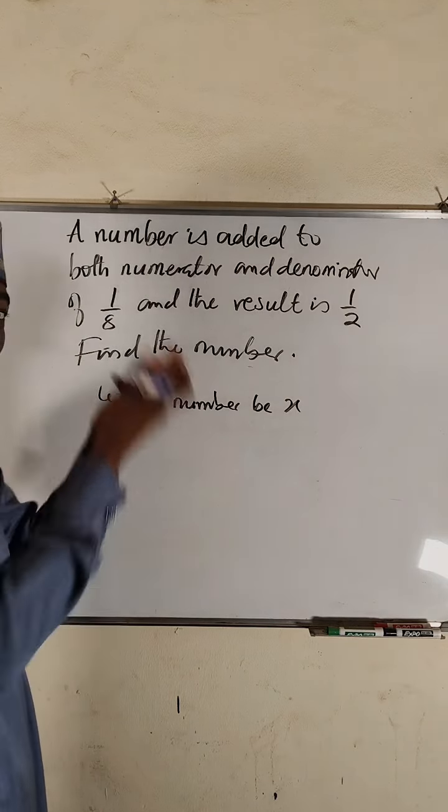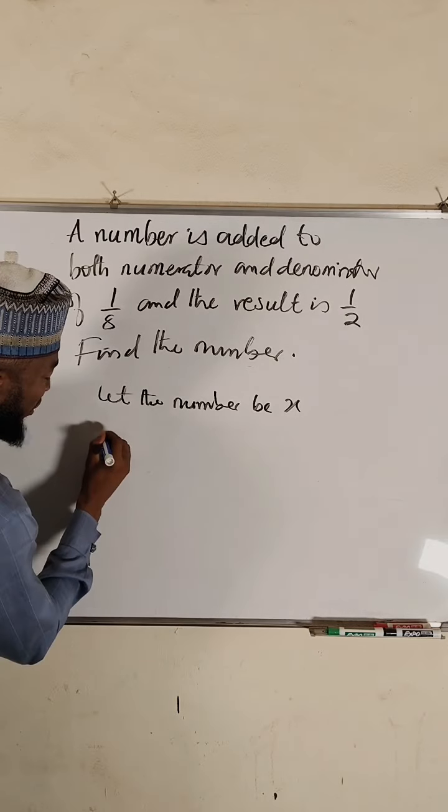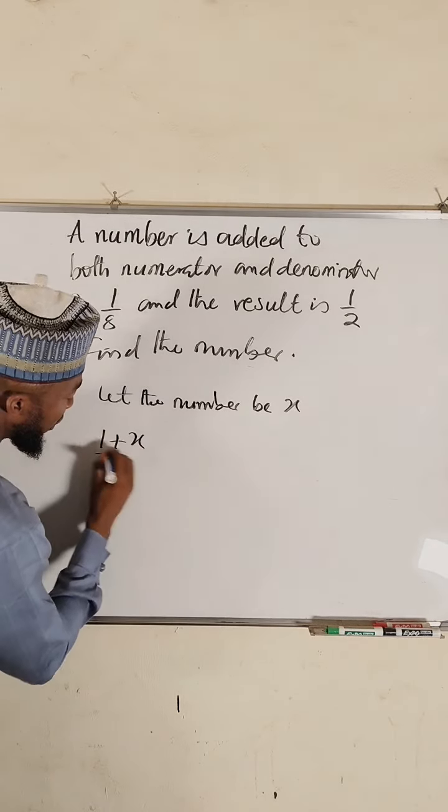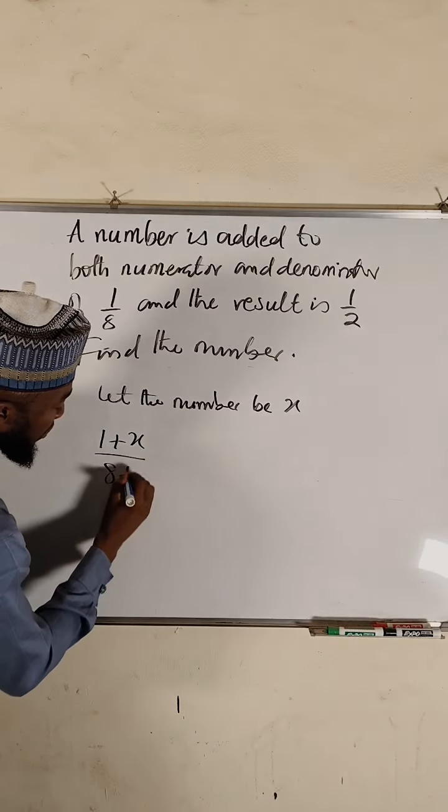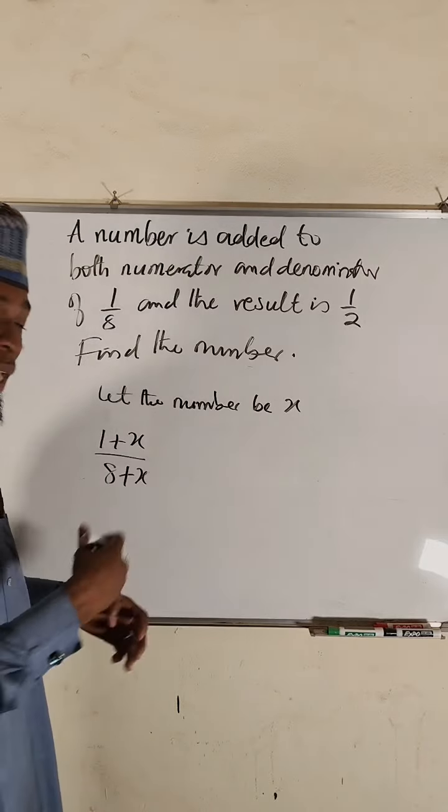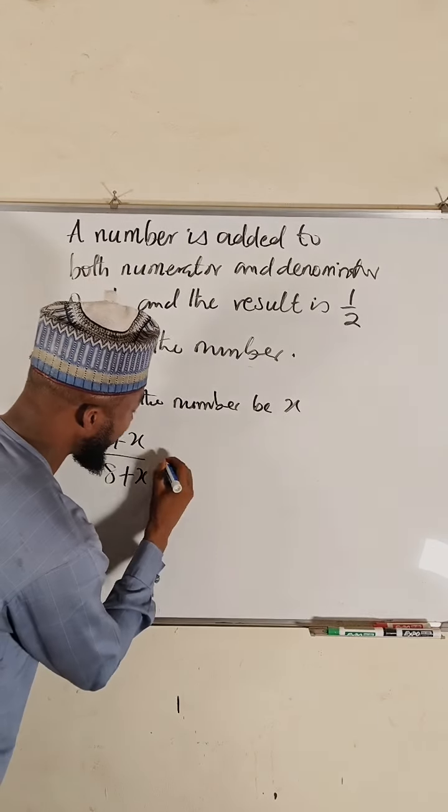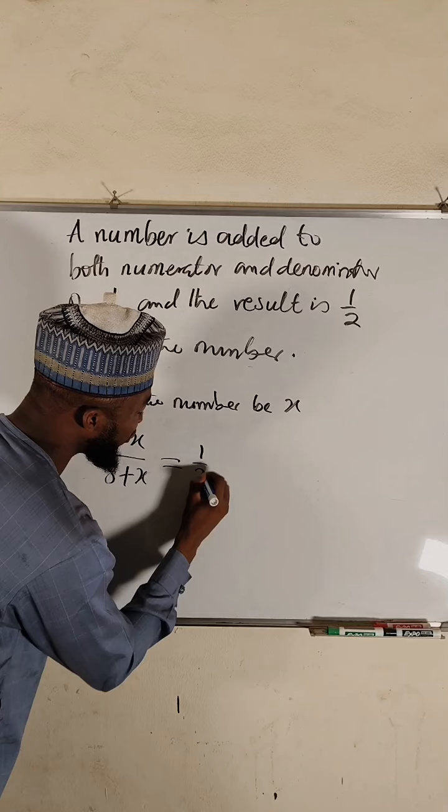We're going to add x to both numerator and denominator of this fraction, so it becomes one plus x divided by eight plus x. So we have added a number to both numerator and denominator, and they said that the result is one over two.